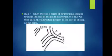Rule 4: when there is a series of bifurcations opening towards the core at the point of divergence of the two type lines, the bifurcation nearest to the core is chosen. In this figure, we have B and C as our type lines and two bifurcations. We choose the delta at the bifurcation nearest to the core.